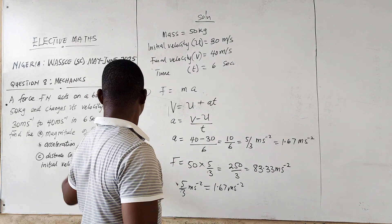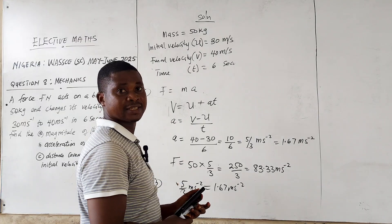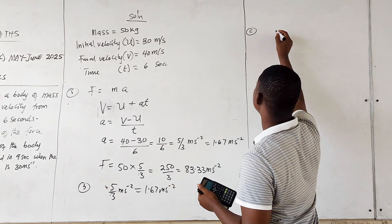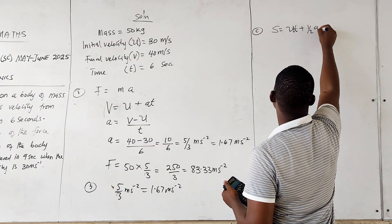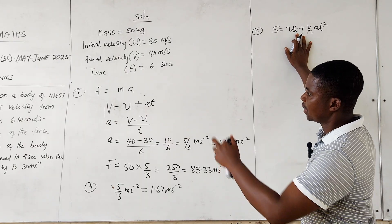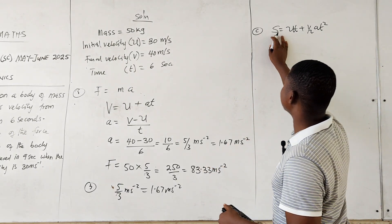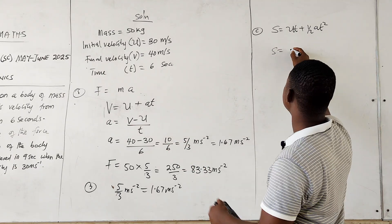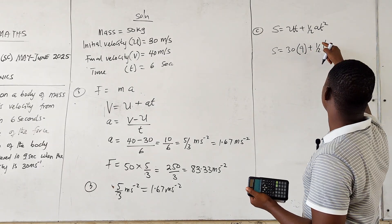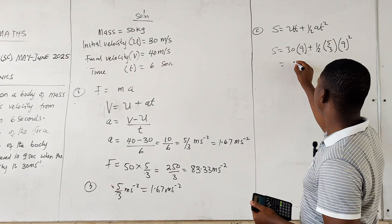For part (c), we need to find the distance covered in nine seconds when the initial velocity is 30 meters per second. We use the formula s = ut + ½at². We know u = 30 m/s, t = 9 s, and a = 5/3 m/s². Substituting: s = 30 × 9 + ½ × (5/3) × 9².